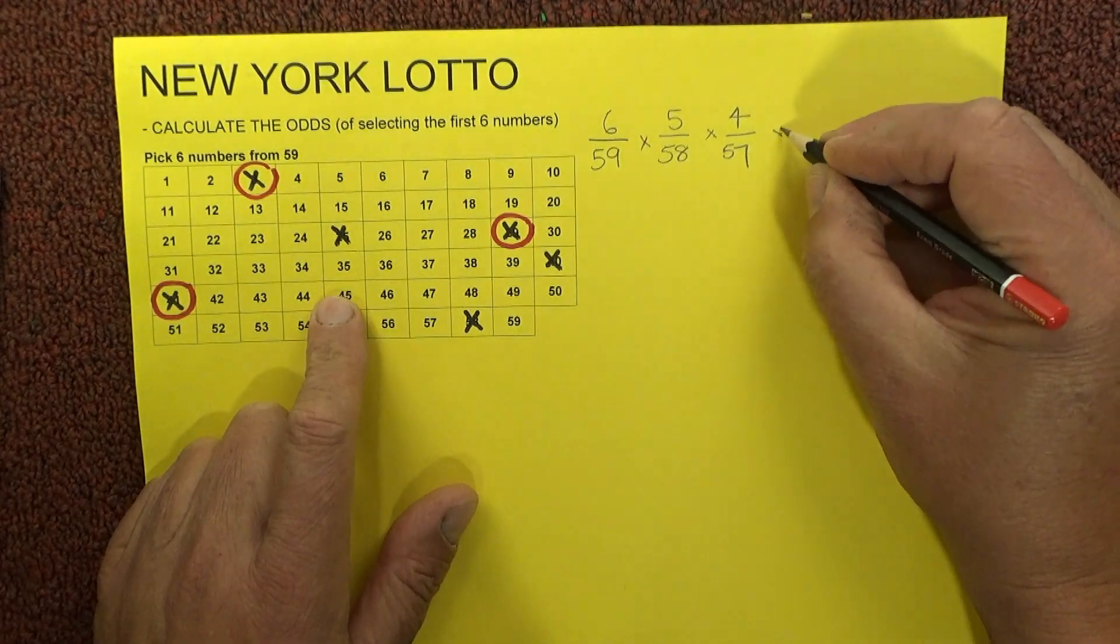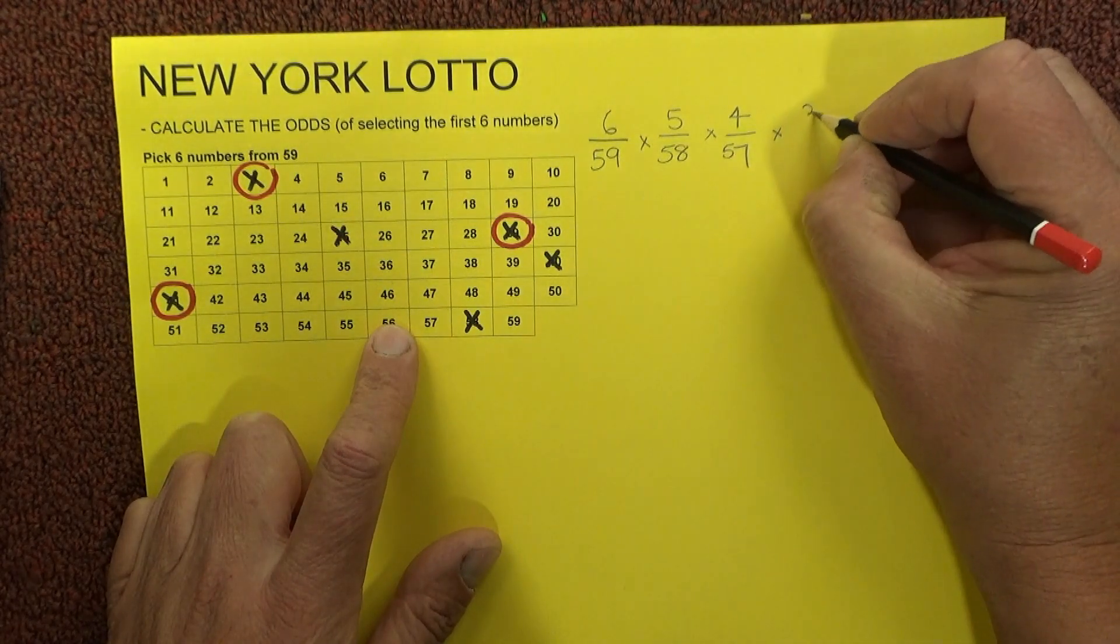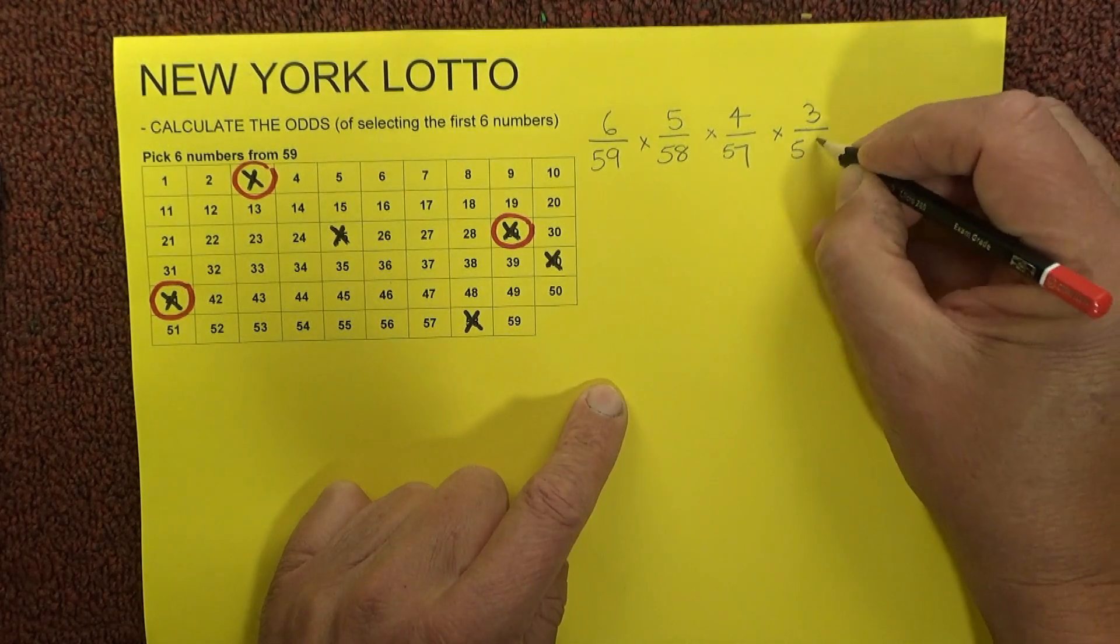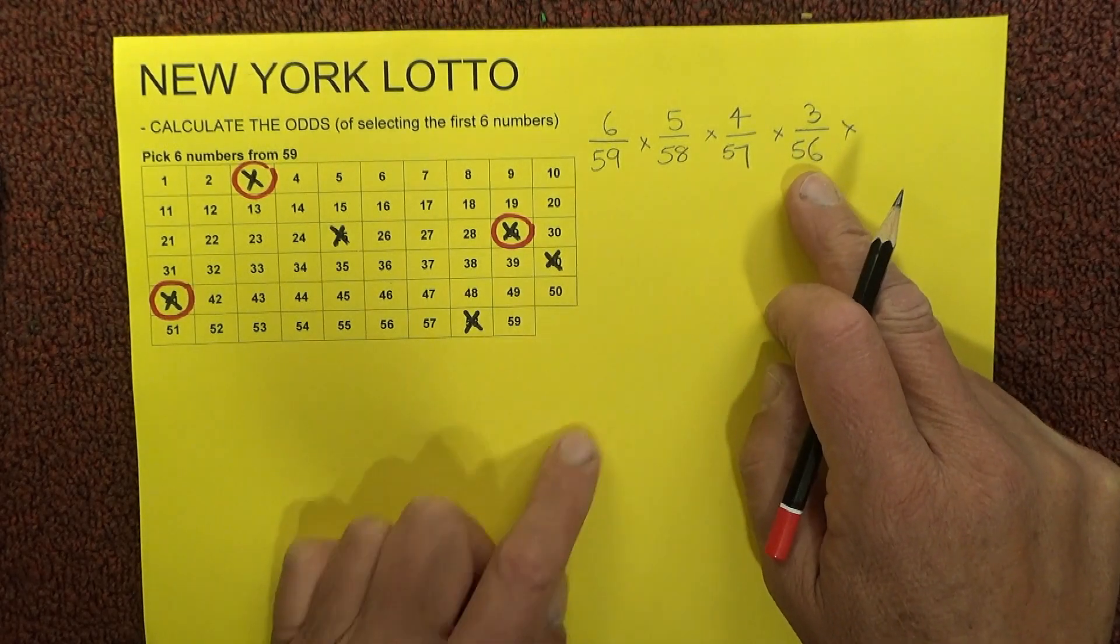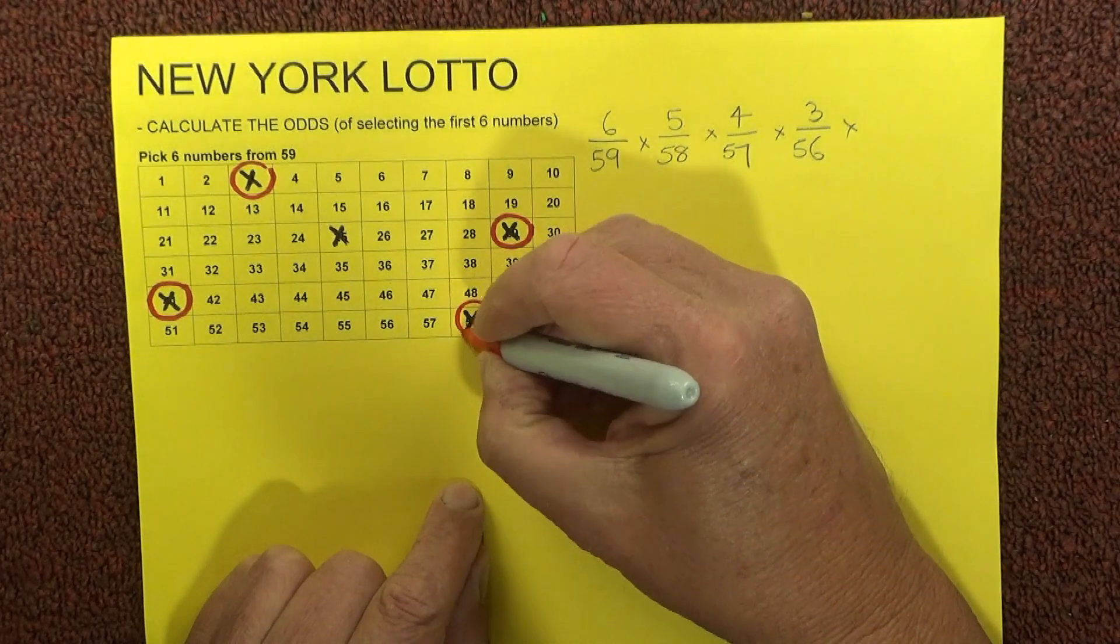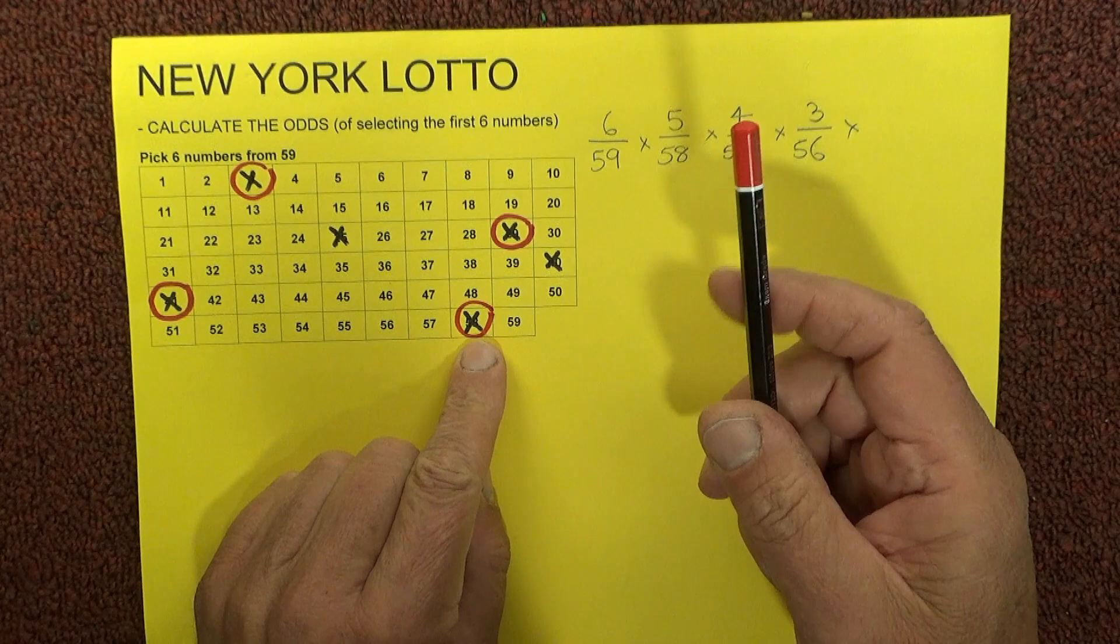Fourth number that's drawn, you've got 1, 2, 3 unmatched numbers left on your coupon. You've got 56 balls in the barrel, so to match the fourth number, you've got three chances in 56 of matching the fourth number that's drawn. I'll mark off another number to indicate that you've matched that number - number 58 as the fourth number.